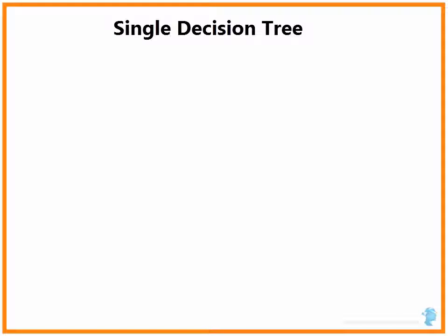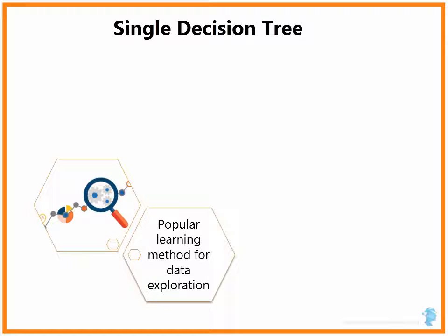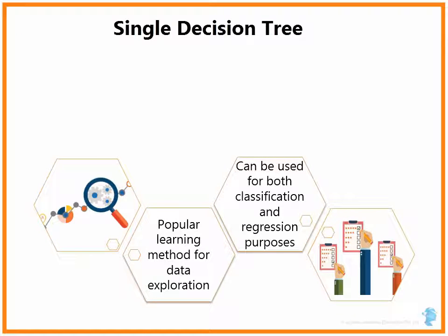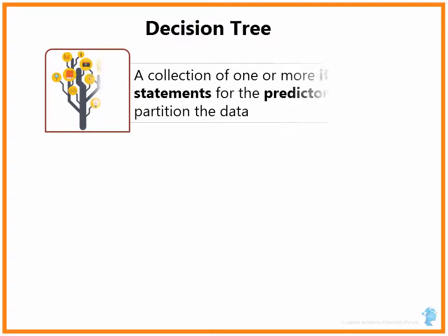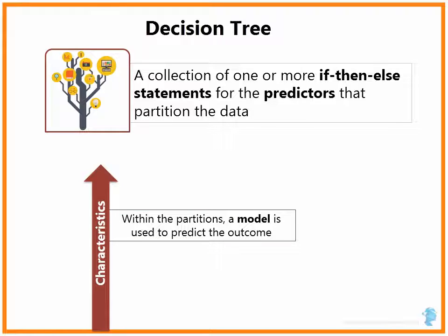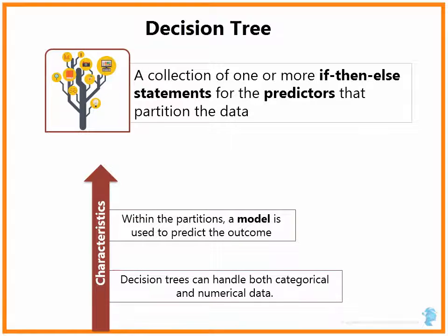I would also like to talk briefly about a single decision tree. A single decision tree is a popular learning method for data exploration and can be used for both classification and regression purposes. However, it is important to understand the difference when a decision tree is used for classification versus regression, because the optimization metric used to decide which variable to split on is very different. Basically, a decision tree is a collection of one or more if-then-else statements for the predictors that partition the data. Within the partitions, a model is used to predict the outcome. Decision trees can handle both categorical and numerical data.